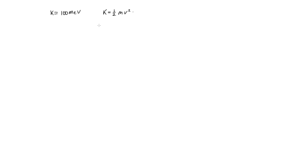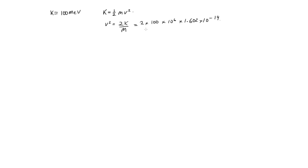So v squared is equal to 2 times K over m. Substituting in: 2K — we're told — is 100 mega electron volts, so that's 100 times 10 to the 6 to account for the mega. And then to get it into joules, we multiply by the charge on an electron, 1.602 times 10 to the minus 19.